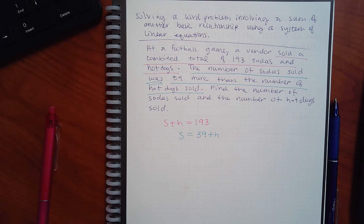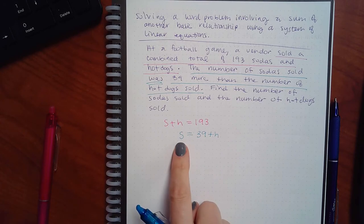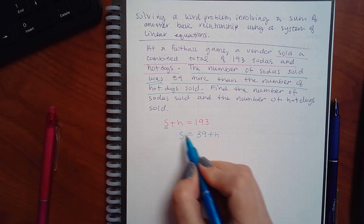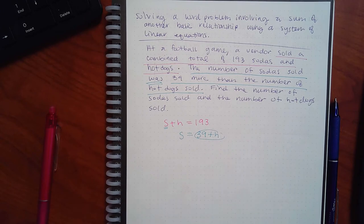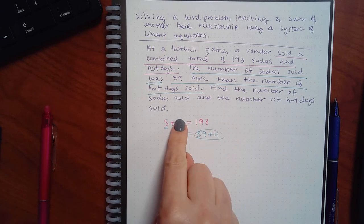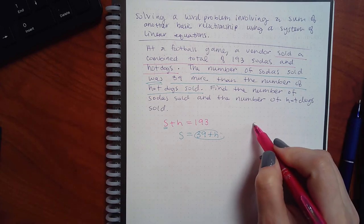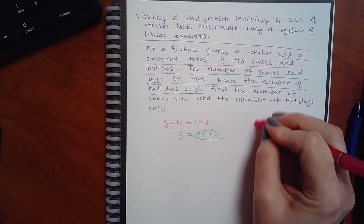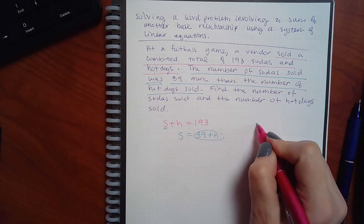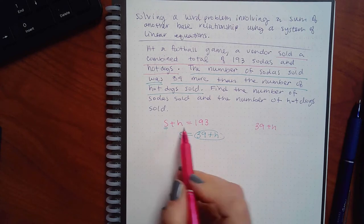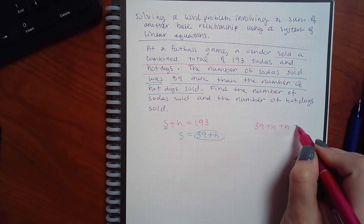Now look at this — which method is it set up for? Is it set up for substitution or elimination? You already have one variable all by itself, so it's set up for substitution. So instead of S here, I'm going to use this expression. You take what you have and put it into the other equation. So this becomes: 39 plus H plus H equals 193.